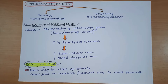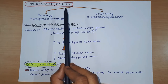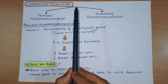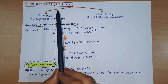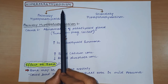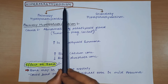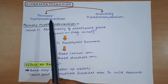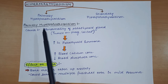Now we will discuss the second disorder of calcium homeostasis, that is hyperparathyroidism. As the name suggests, if parathyroid hormone concentration in our blood plasma increases, that condition is called hyperparathyroidism. Depending upon the reason that causes the increase of parathyroid hormone concentration, we divide it into two parts: primary hyperparathyroidism and secondary hyperparathyroidism.